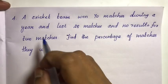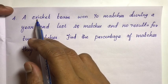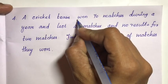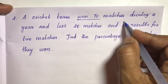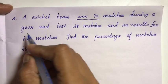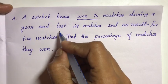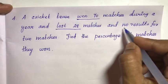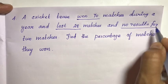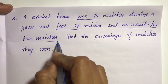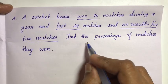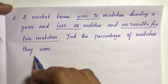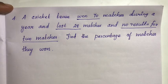Next, fourth question. A cricket team won 70 matches during a year, lost 28 matches, and had no result for 2 matches. Find the percentage of matches they won.